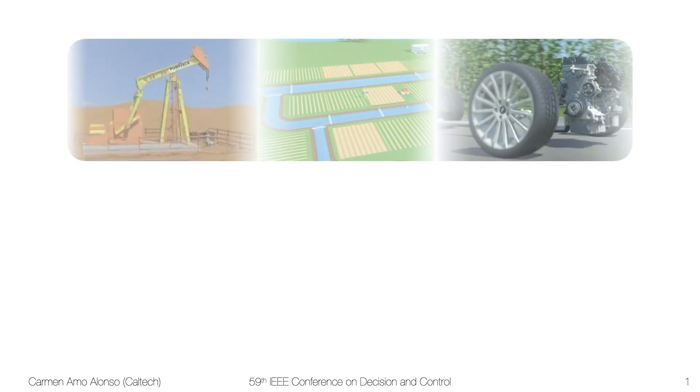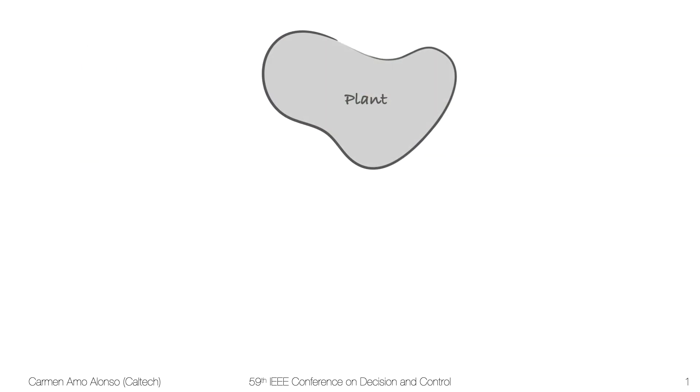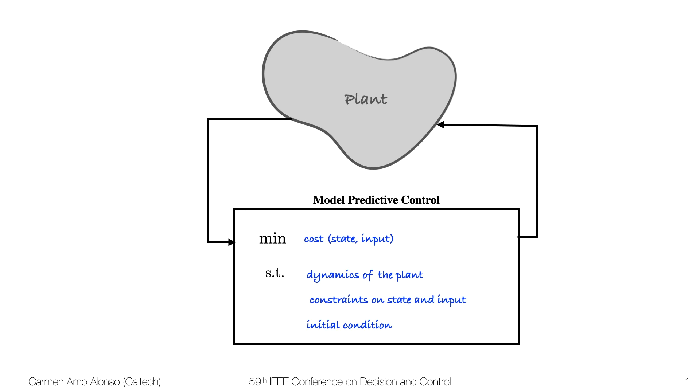Let me start by emphasizing how useful model predictive control has been in practice for a variety of industrial applications. We can think of them as a plant trying to solve an optimal control problem, minimizing a cost subject to the dynamics of the plant, constraints on the state and input, and an initial condition. If we formalize this mathematically, this is how we would write it.